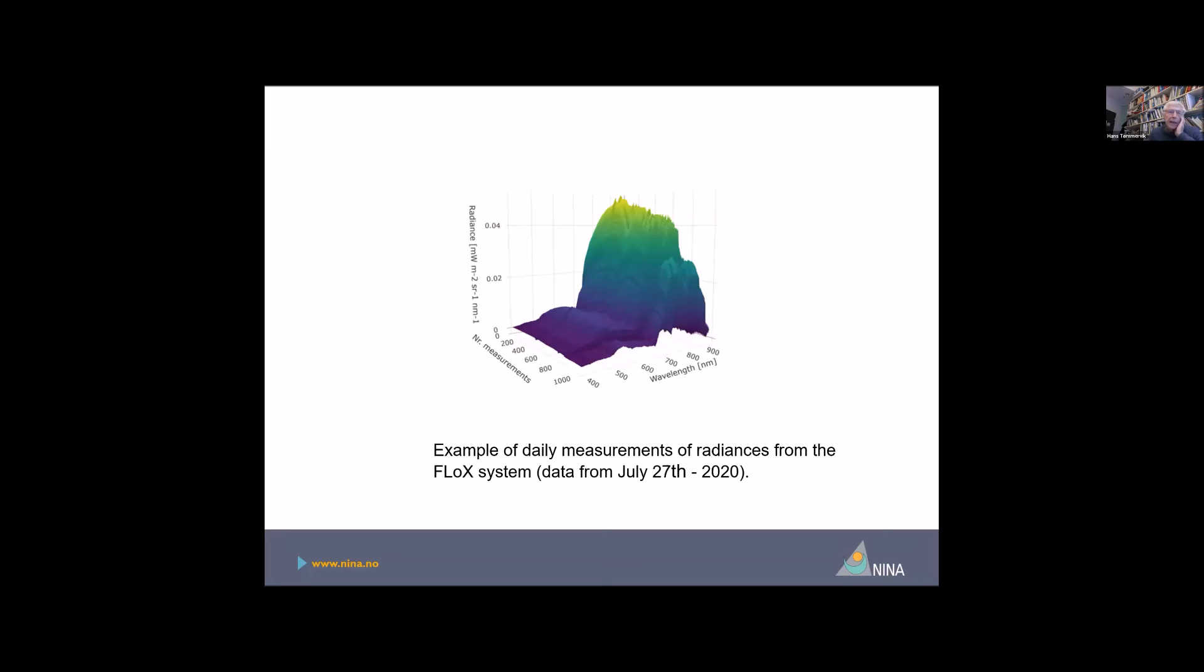And this is an example of the daily measurements of radiances from the FLOX system. This is from 27th of July, 2020. And you see, actually, this is the formation from the 400 to the 900 nanometer wavelength of the more coarse resolution spectrometer.